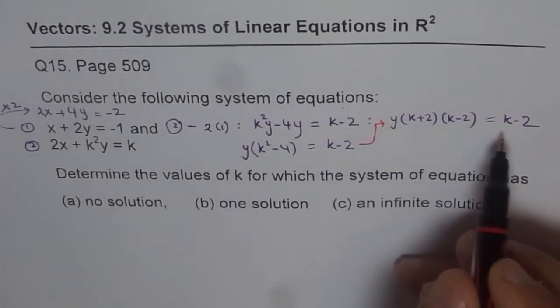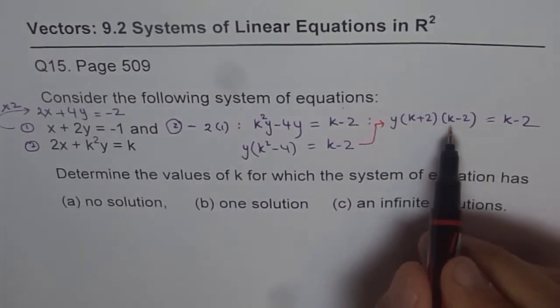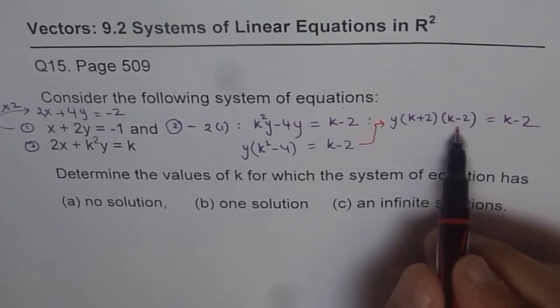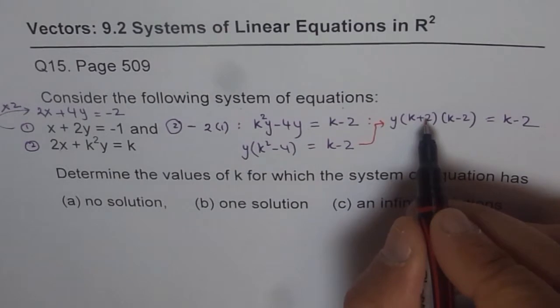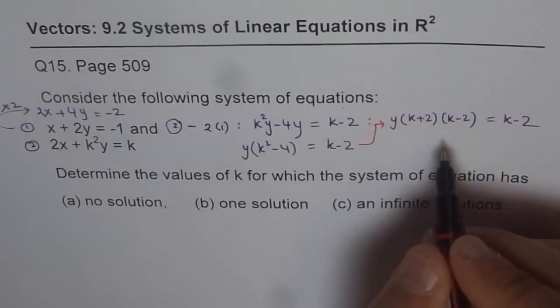Now, if you analyze this, if I give k as a value of 2, then what happens? So we have two cases here. k could be plus 2, and k could be minus 2. What happens?